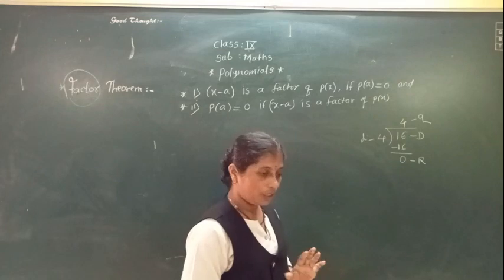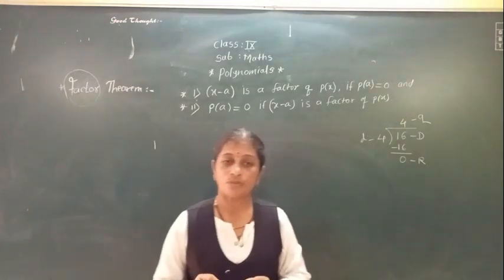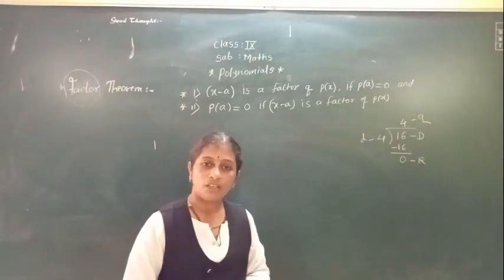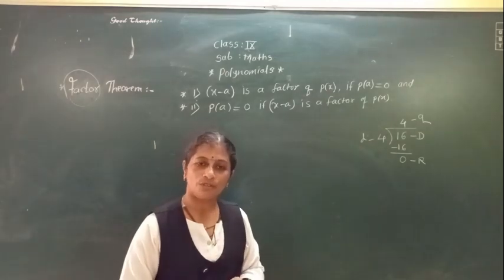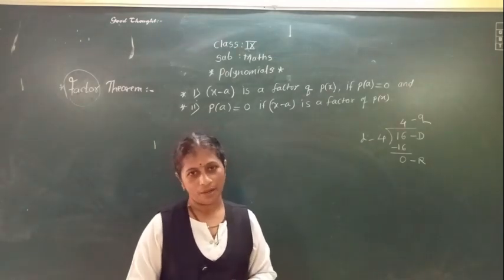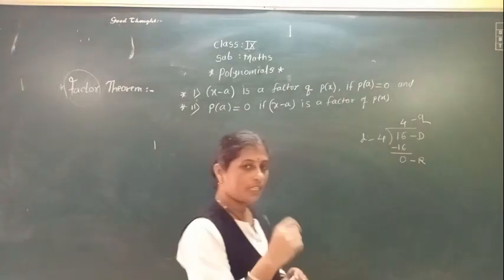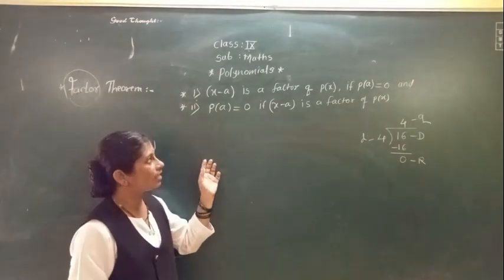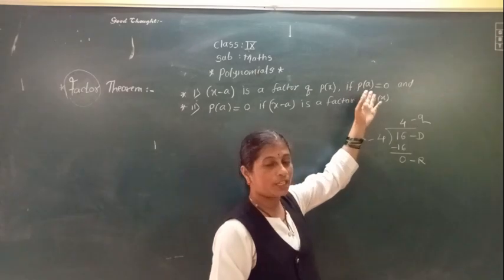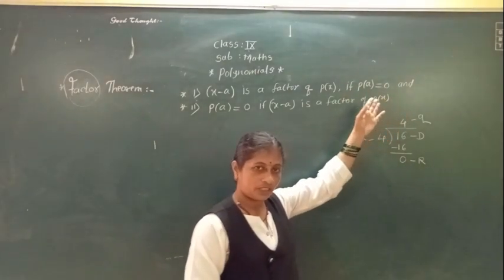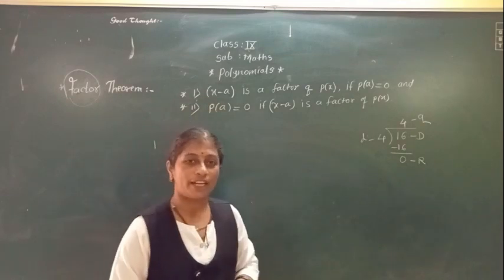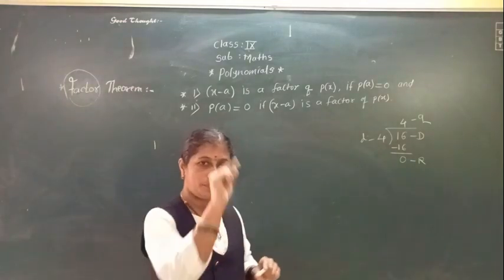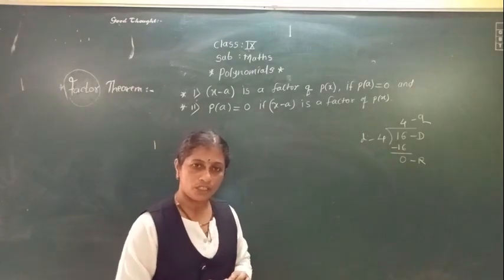So as we know, the dividend means let's take your polynomial P(x). The divisor means G(x). When you divide this divisor into your polynomial and you are getting the remainder as 0, then we can say that this divisor is the factor of your polynomial.